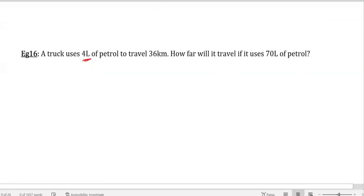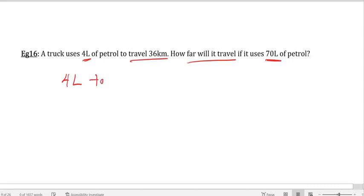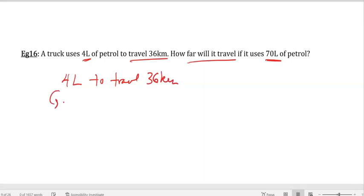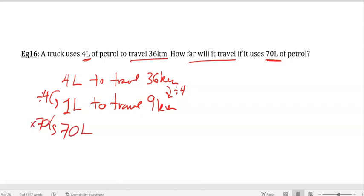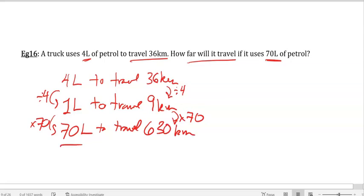A truck uses 4 liters of petrol to travel 36 kilometers. How far will it travel if it uses 70 liters of petrol? The first thing we want to do is 4 liters to travel 36 kilometers. What we want, using the unitary method, is to find 1. How did I do that? Divide by 4, do the same on the other side, and I find that in 1 liter of petrol, I can travel 9 kilometers. Now, I want to use, I've got 70 liters of petrol. How far is that going to take me? I multiply that by 70. I can use 70 liters of petrol to travel 9 times 70. I've got to do that in my head. But 9 times 70, 630 kilometers, using 70 liters.